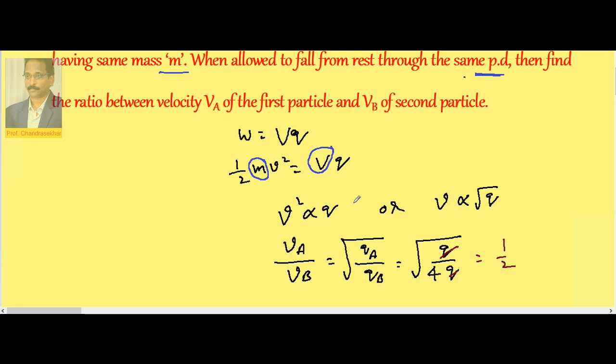So here we are applying work energy theorem and W equals VQ. Work done is change in kinetic energy. W equals half MV squared minus half MU squared. Allowed to fall, so U is considered to be 0.